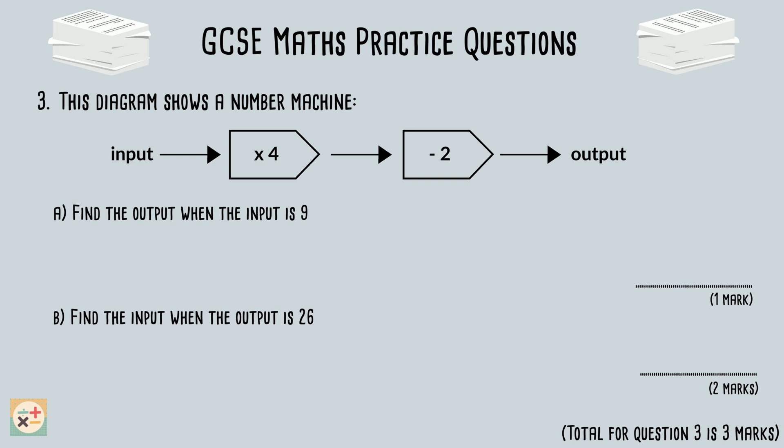So, we start with 9 as the input, and multiply this by 4, which equals 36. We then subtract 2 from 36, giving us an answer of 34. As there are no further operations, the answer of 34 is the output. We can write this in the answer space. This part of the question is worth one mark, so the examiner is only looking for the correct answer.